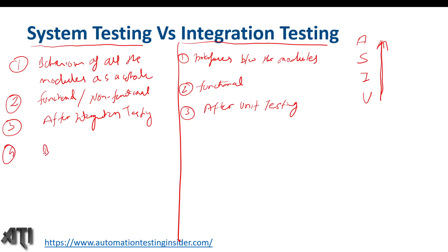The fourth difference is the technique we use. In system testing, we use the black box technique. In integration testing, we use black box plus white box. Black box means we don't care about the internal structure of the system — we check mainly the functionality.